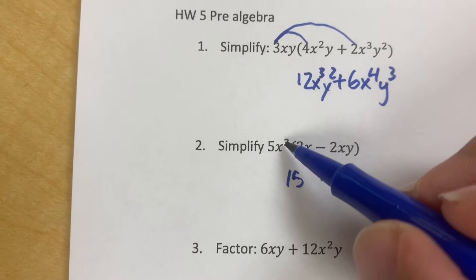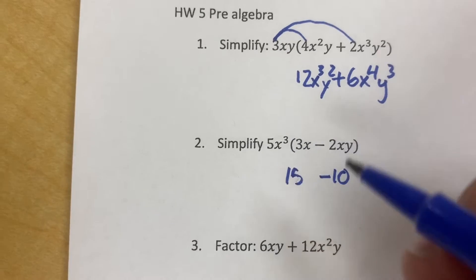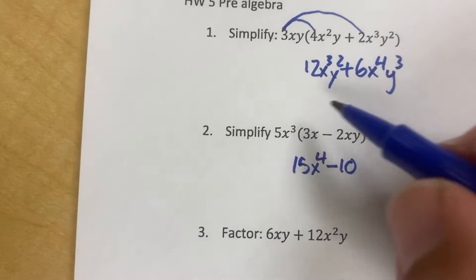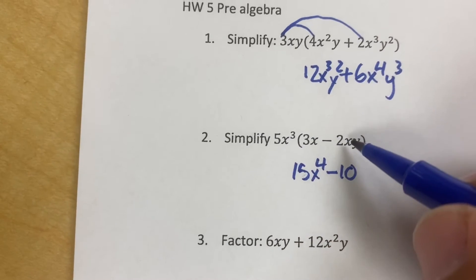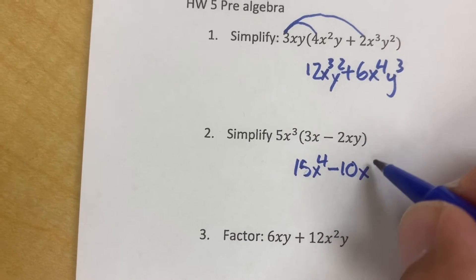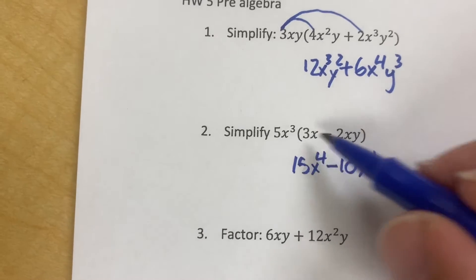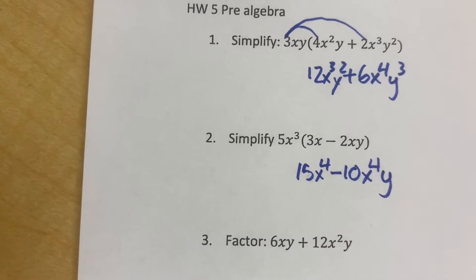Now the x³ is adding itself to x, making it x to the fourth. x³ is adding itself to x, making it to the x to the fourth. Now nothing's happened to the y, so the y just stays where it is.